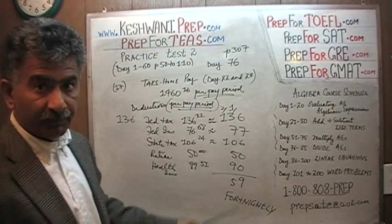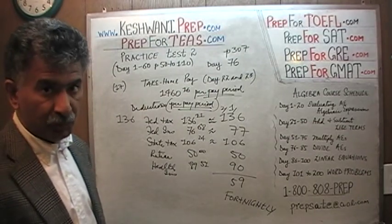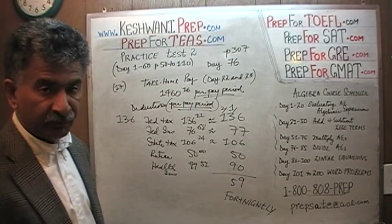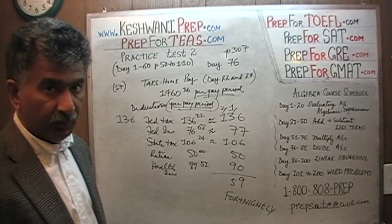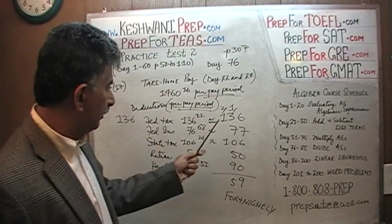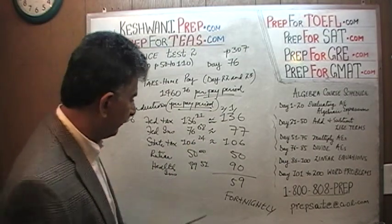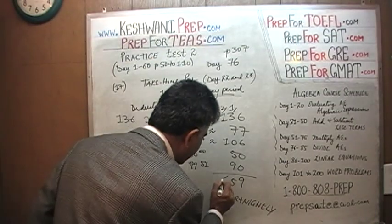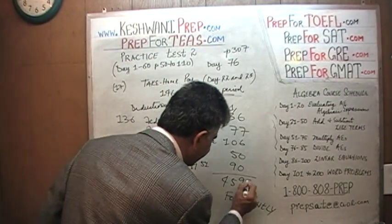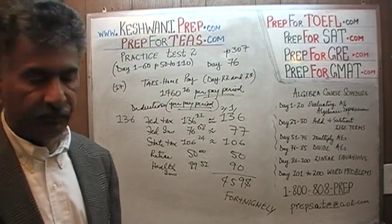If you are going to go all over the place with your addition, make sure you concentrate — otherwise you will lose track. The total deductions come out to $459.